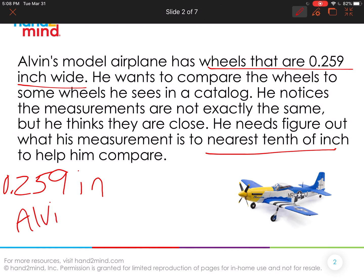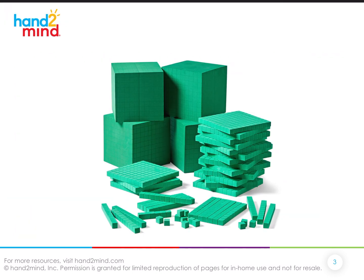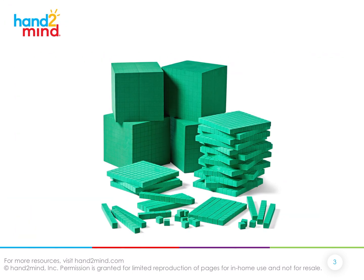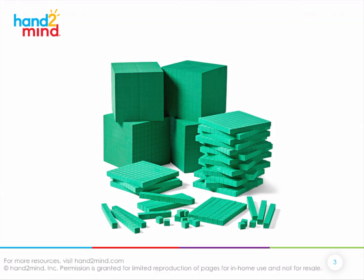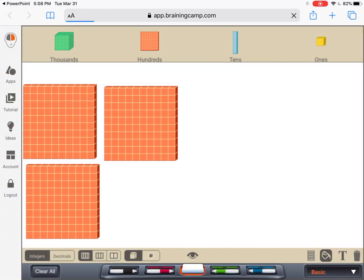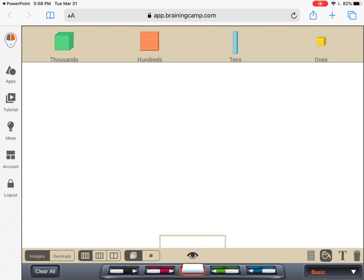And these are about Alvin's wheels, right? And he wants to know to the nearest tenth of an inch instead. He doesn't want to go all the way to the thousandths. Okay, so how can we help him? Well, we're going to use, we're going to model this using our base 10 blocks. If you have these at home, please follow along with us. And if you don't, it's okay. You can join us using the Braining Camp app, or you can just follow along with us.